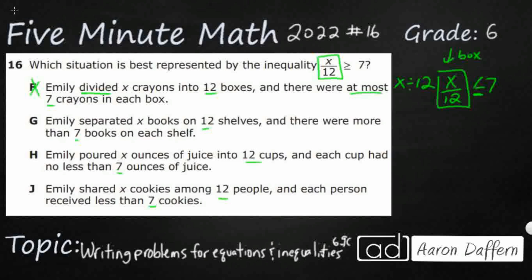G: Emily separated x books on 12 shelves, and there were more than 7 books on each shelf. Separating into 12 equal groups is also division, so we've got x over 12. And "more than 7" means greater than 7, but it doesn't say equal to — it has to be strictly more than 7. So that gives us x over 12 greater than 7. We're close, but it's missing the "equal to" part.